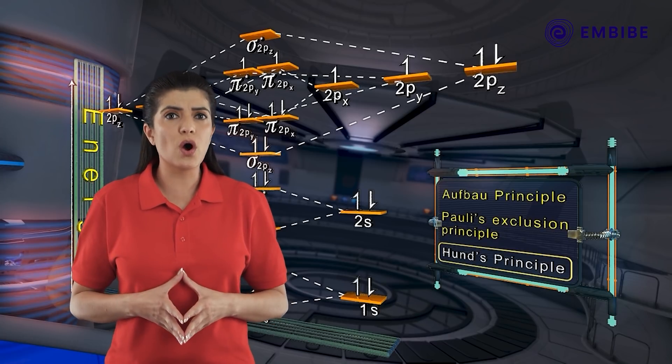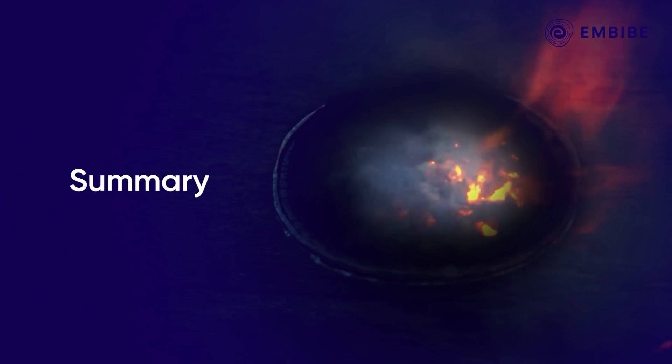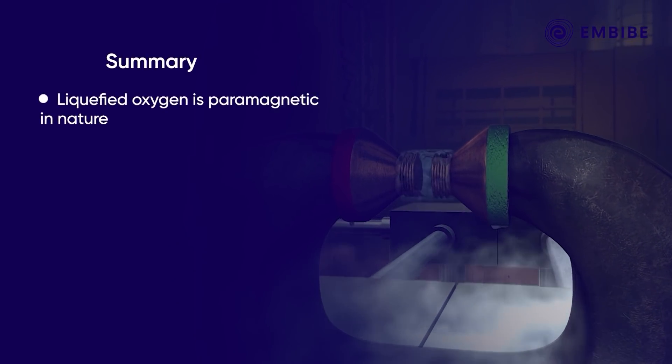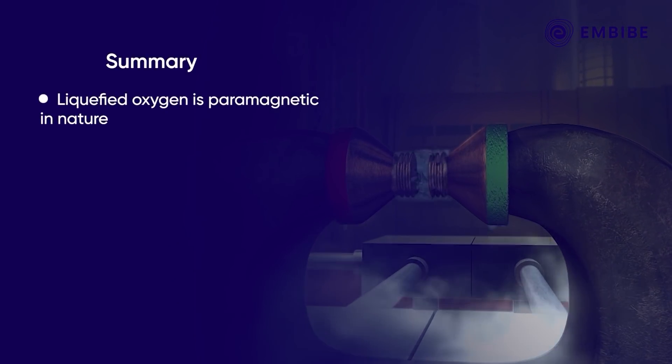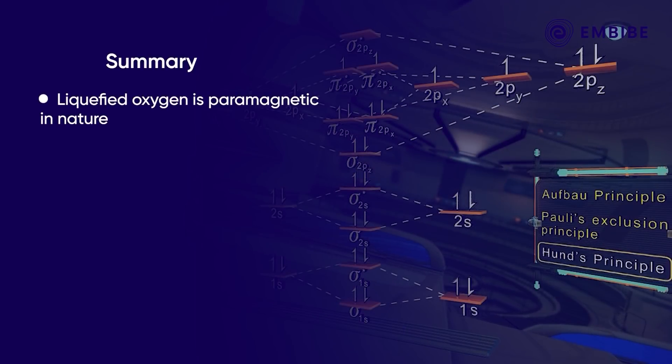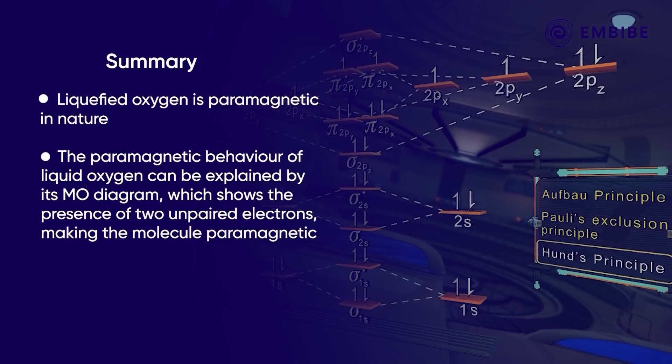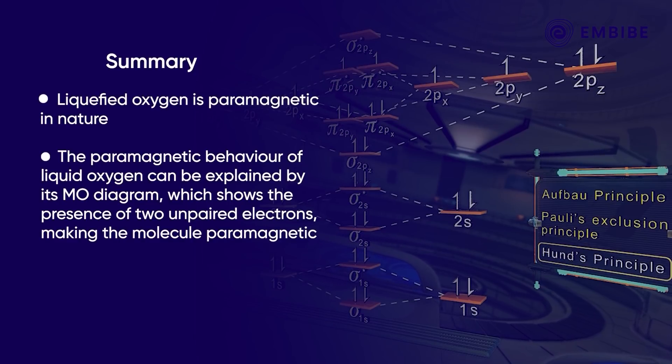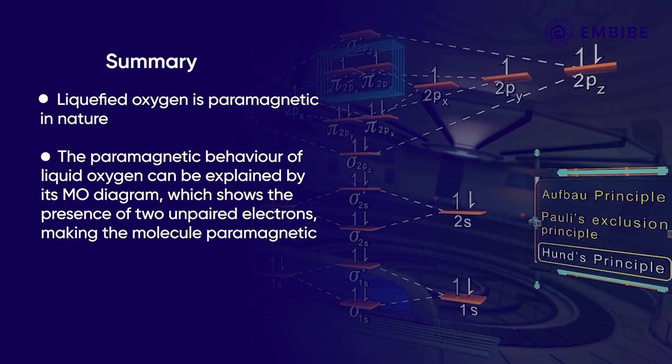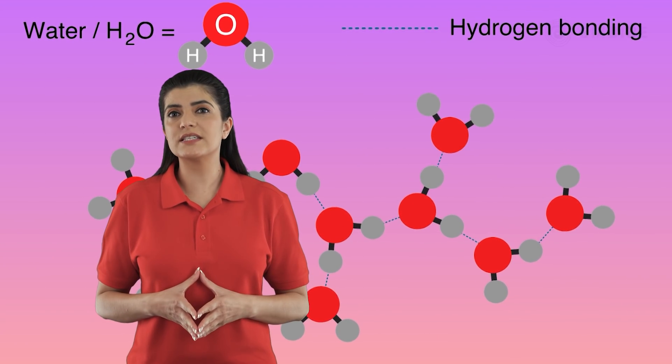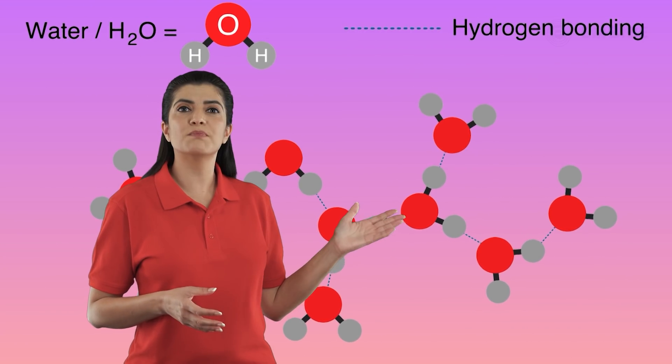To summarize, we have studied that liquefied oxygen is paramagnetic in nature - that is, it remains suspended between the poles of a horseshoe magnet. The paramagnetic behavior of liquefied oxygen can be explained by its MO diagram, which shows the presence of two unpaired electrons making the molecule paramagnetic.